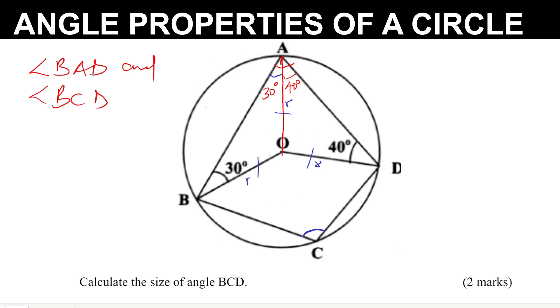Angle BAD and angle BCD, those are opposite angles in a cyclic quadrilateral, and there is a property connecting that.